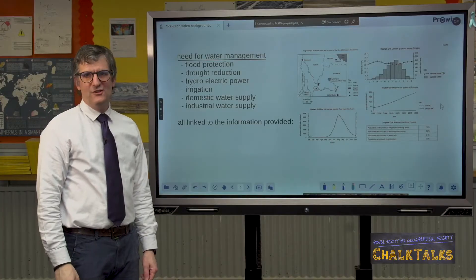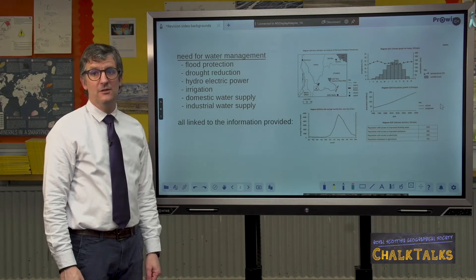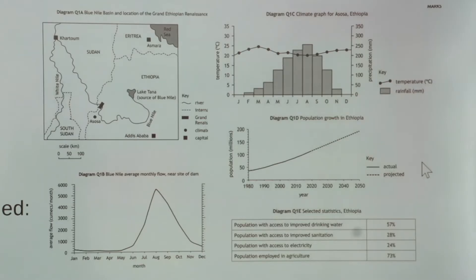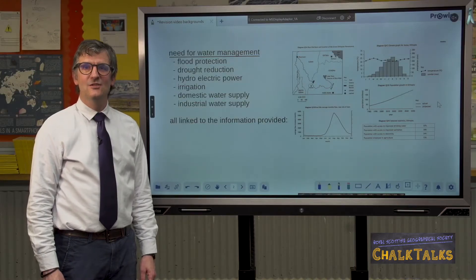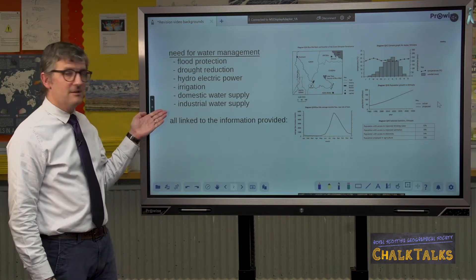A very common question in river basin management is to be asked why there is a need for water management on a certain river. The question will come with a wide range of information, usually including population data and statistics of some kind, as well as a map and climate graphs. You will get credit for reading values from any graphs, but to answer the question you need to relate this information to the purpose of building a dam or reservoir. Keep in mind that large dams have multiple uses — try to mention all of the different uses in your answer.